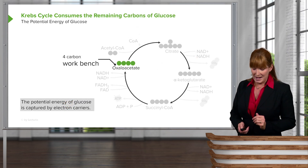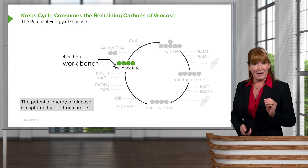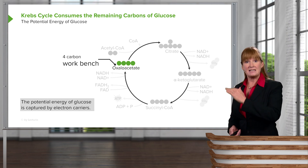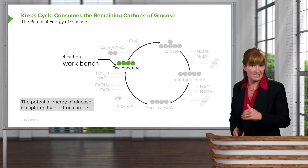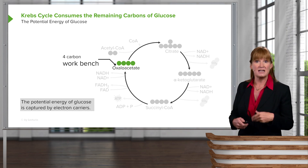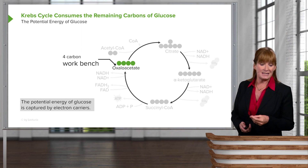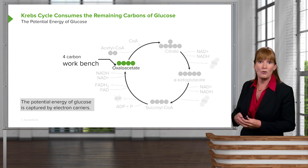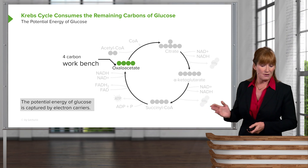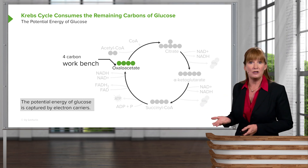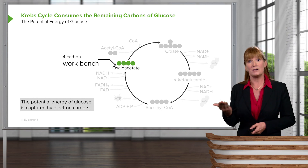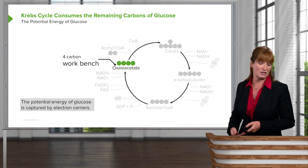The workbench is recycled — that's why it is called the TCA cycle, Krebs cycle, or whatever cycle you prefer. The workbench is regenerated; it picks up two more acetyl-CoAs and continues going around. The original molecule, oxaloacetate, is the four-carbon workbench that picks up more acetyl-CoA and continues cycling.